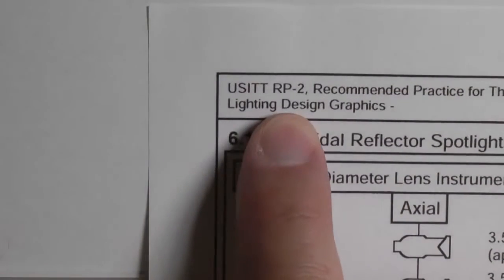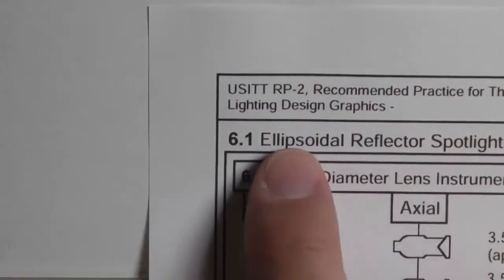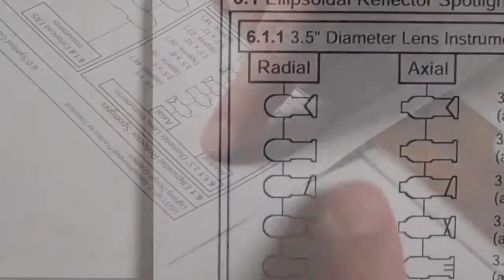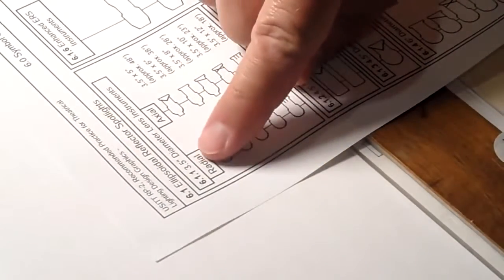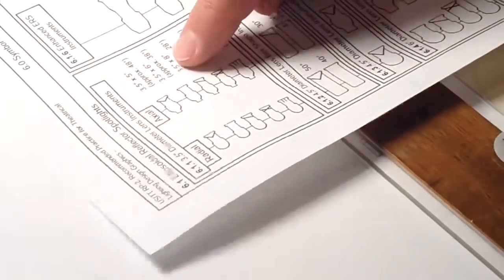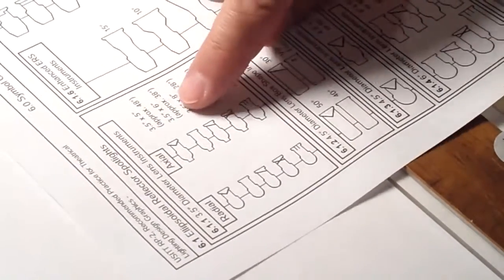So here we have USITT recommended practice for theatrical lighting design graphics. We've got some units that are using three and a half inch diameter lenses, three and a half by five and three and a half by six.